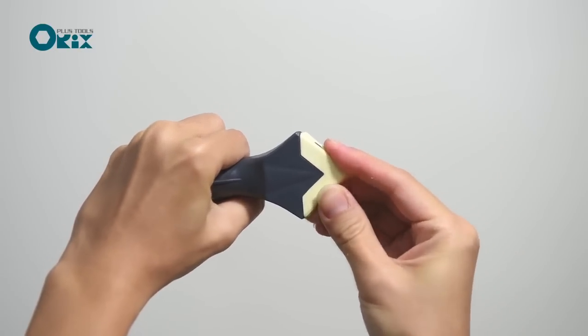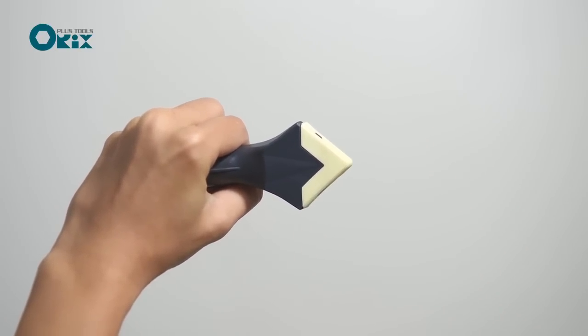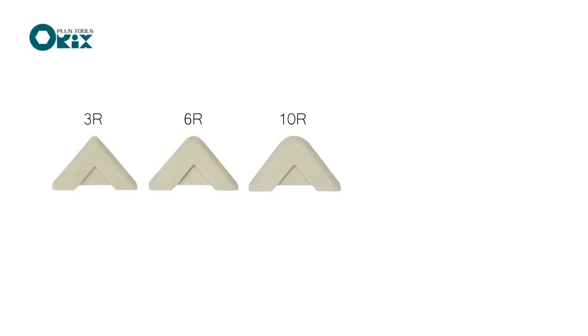There are five different sizes of radius pads for you to choose from: 3R, 6R, 10R, 13R, and 17R.